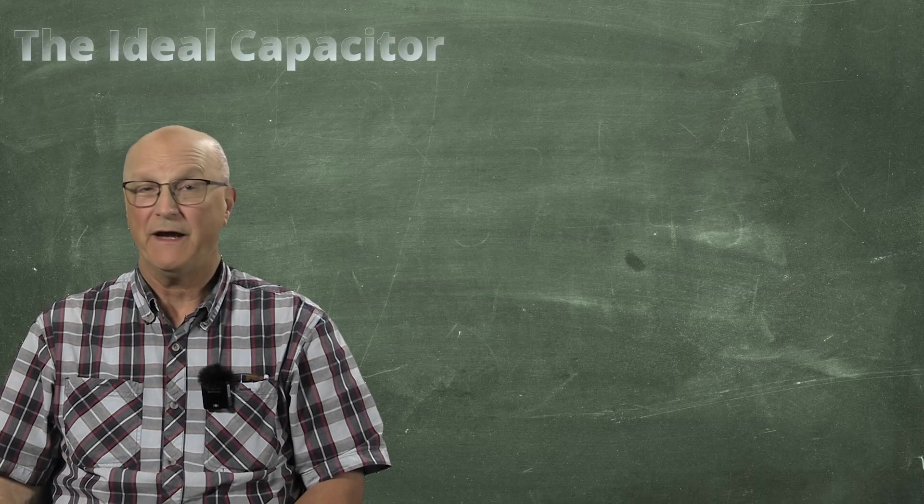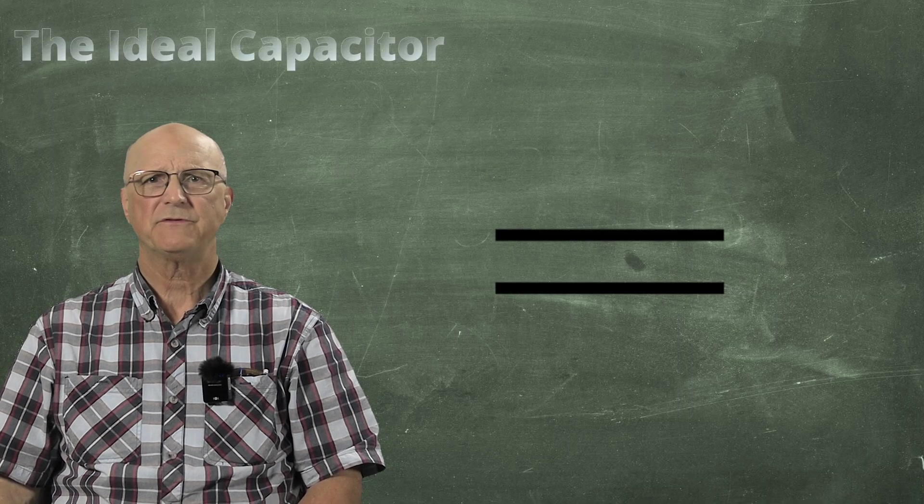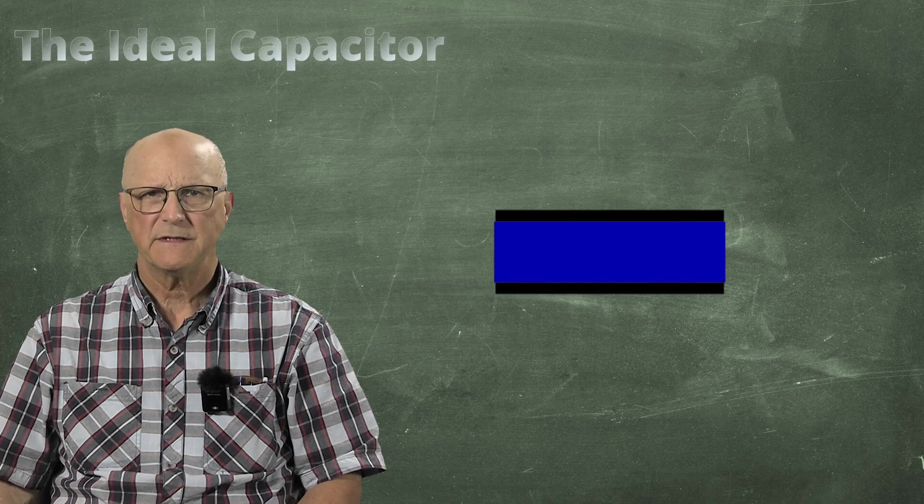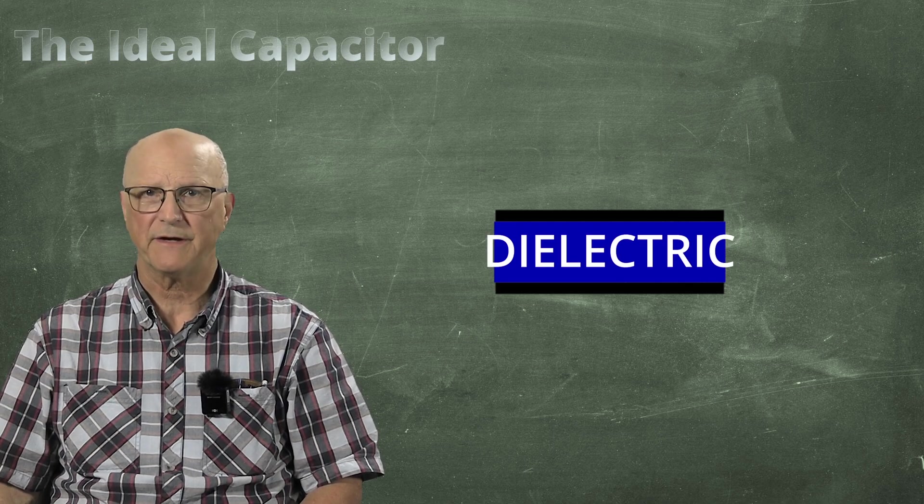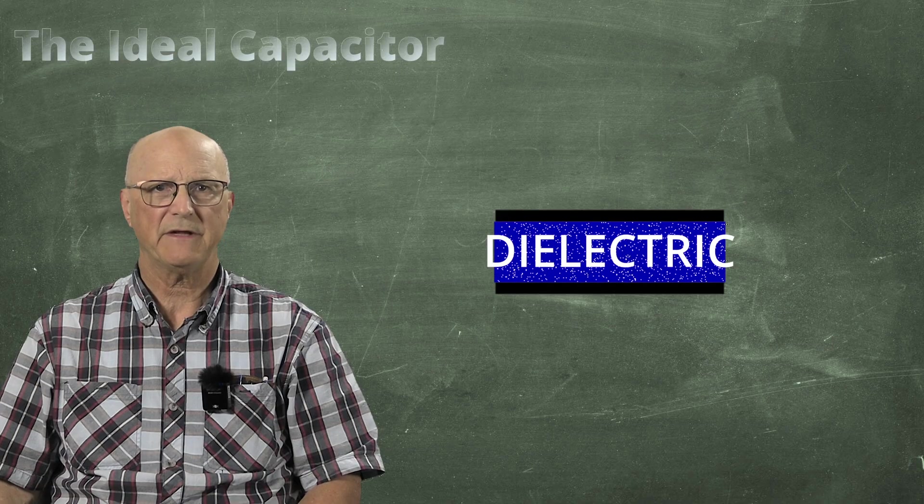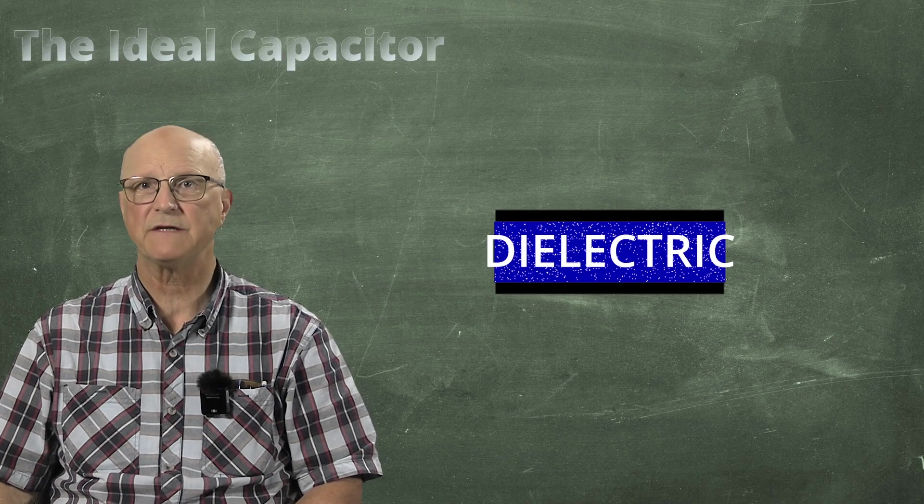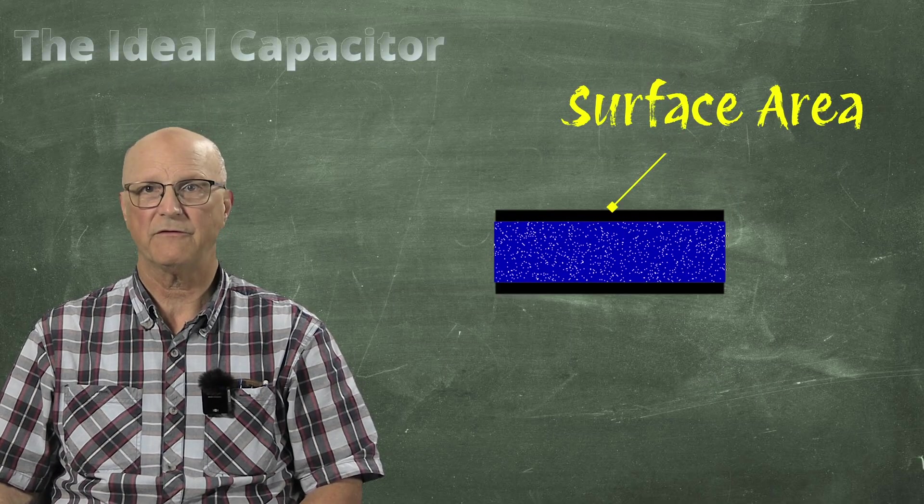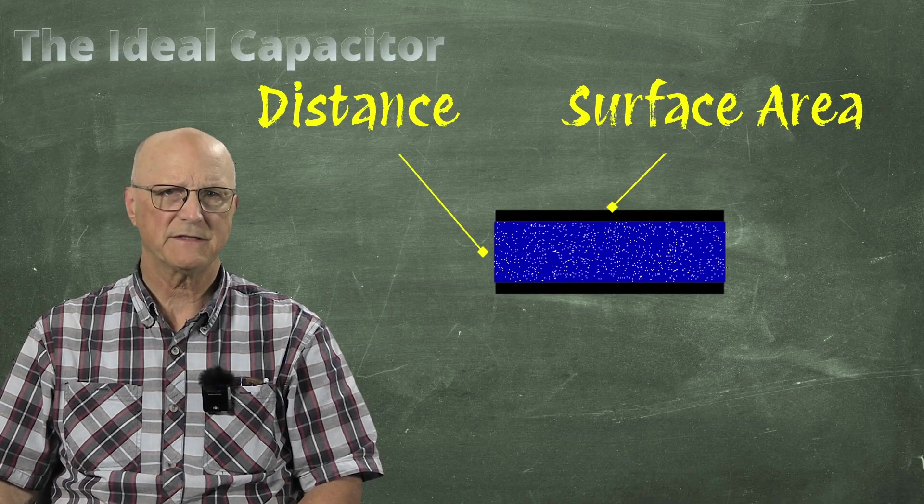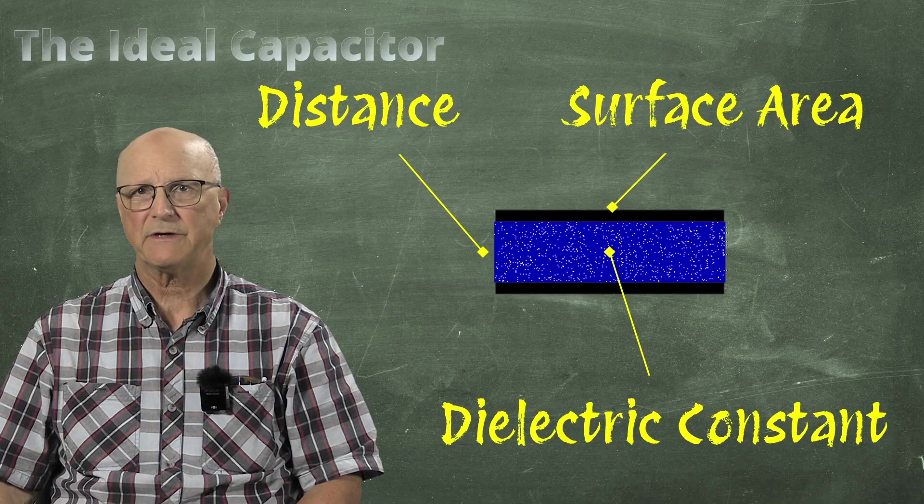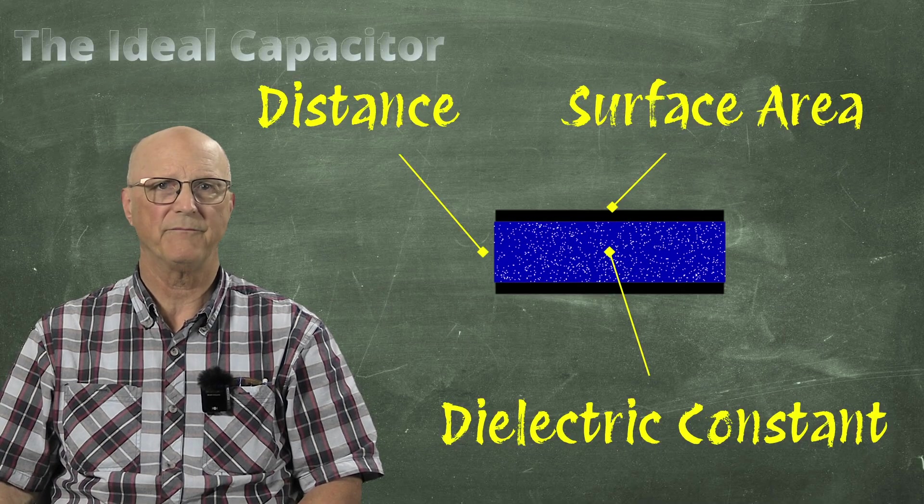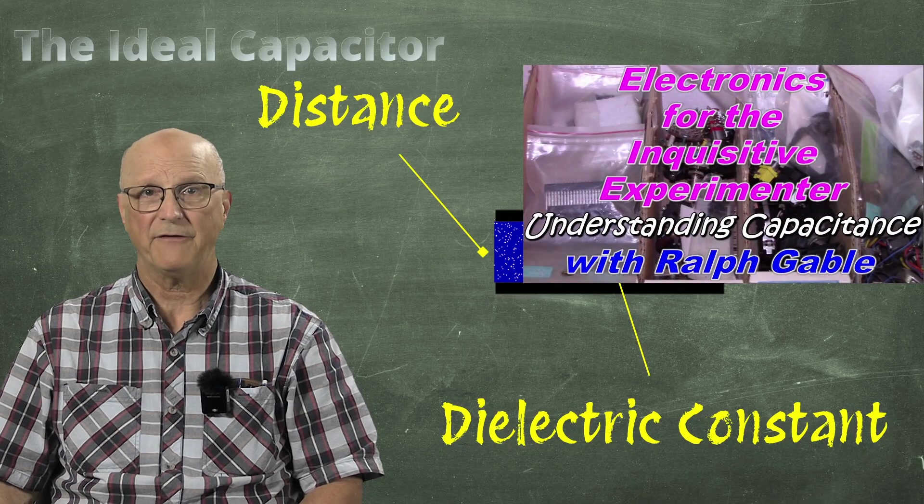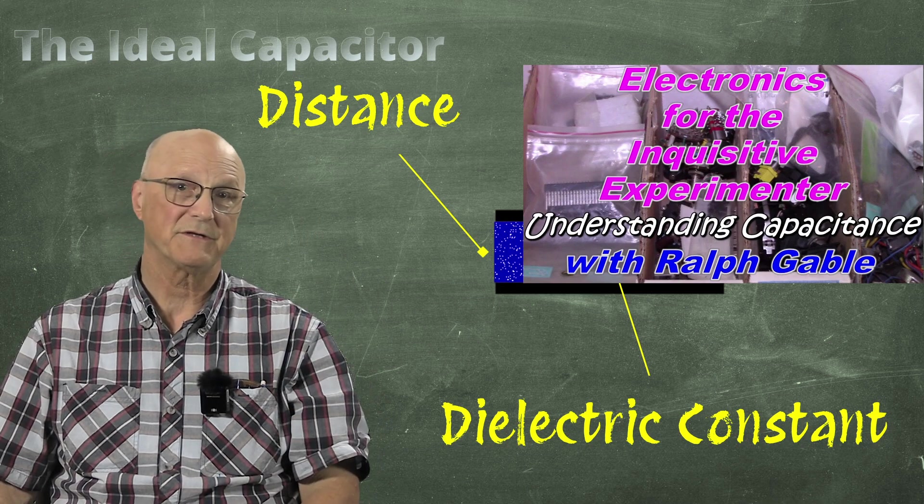So let's begin with the ideal capacitor. It consists of two separate conductors with some sort of insulating material in between. This insulating material is called the dielectric. A good dielectric easily develops opposing electric fields within itself in the presence of an electric field. The amount of capacitance varies with the surface area of the conductors, the distance between the conductors, and the dielectric constant of the insulating material between them.